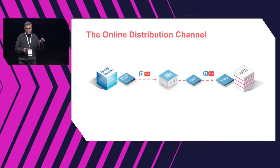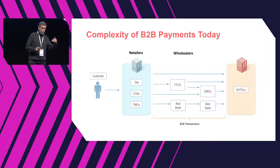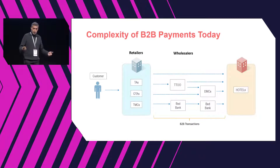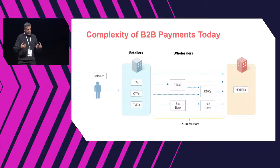The real picture is more complex. At one end you have the guest, the end customer, who books through a retailer — which could be an online travel agent, a brick-and-mortar travel agent, or a travel management company. Those players have direct relationships with hotels, but they also source their inventory through other intermediaries and wholesalers like tour operators, destination management companies, and bed banks. There's a significantly complex ecosystem of players that has kept getting more and more complex over time.